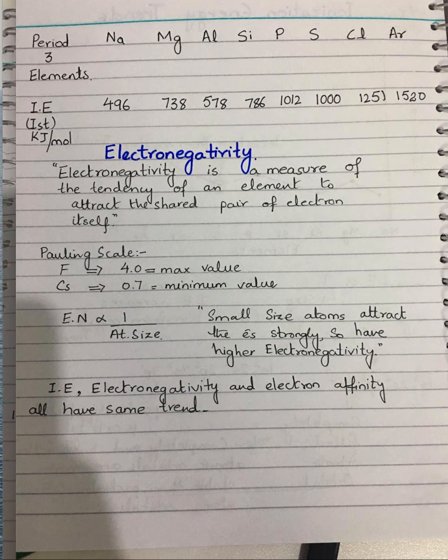Applying this to period number three elements: from left to right, atomic size is decreasing. When atomic size decreases, electronegativity value increases, and chlorine has got the maximum electronegativity value among period three elements. Argon is not discussed here because it is a noble gas — since it does not form covalent bonds, there is no electronegativity value assigned to argon.